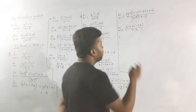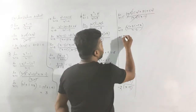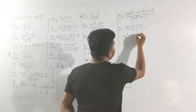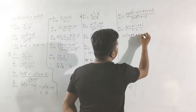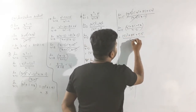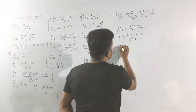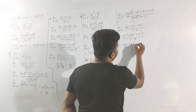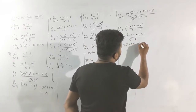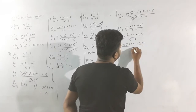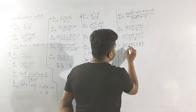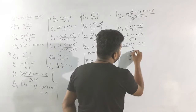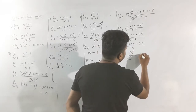Substituting x equals 5: 5 squared plus 25 plus 5 into 5, divided by 5 minus 2. That gives 25 plus 25 plus 25, divided by 3 equals 75 by 3. The answer is 25.